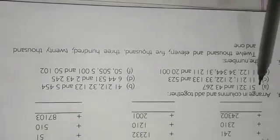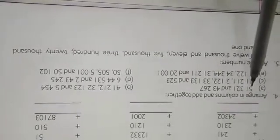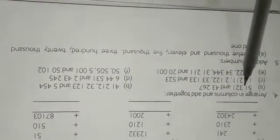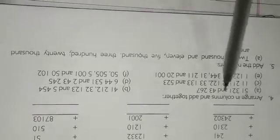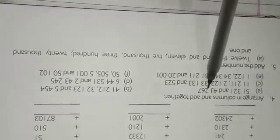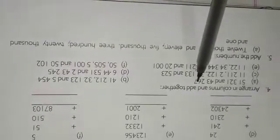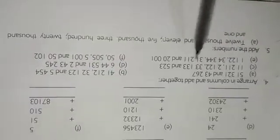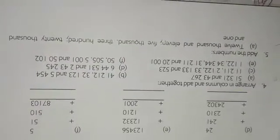Here have given number 51,321 and 43,267. Children, you first write 1, 10, 100, 1000, 10,000.